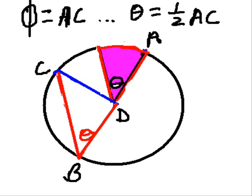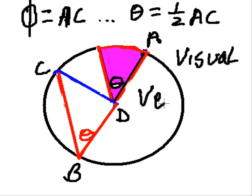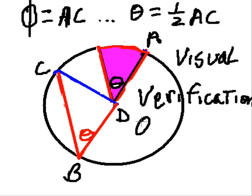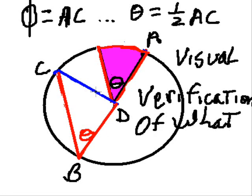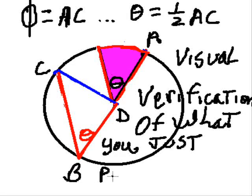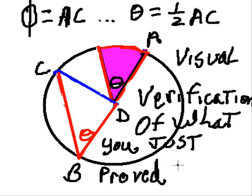That is what you call visual verification, qualification of what you just proved algebraically.